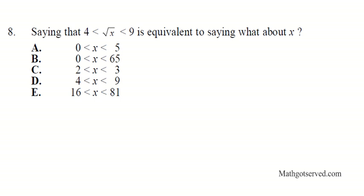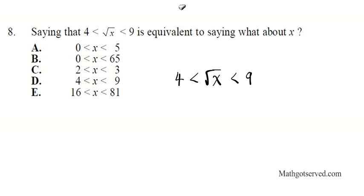The question is: how do we accomplish that? We have 4 is less than the square root of x, and that's less than 9. To get rid of the square root, we need to do the opposite of root, which is square. So we're going to square all three sides of the inequality — we're going to square 4, square the square root of x, and square 9.